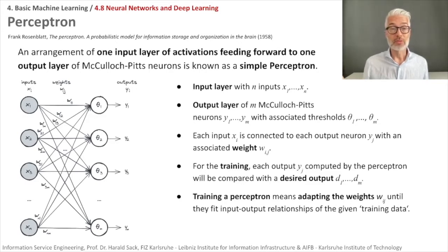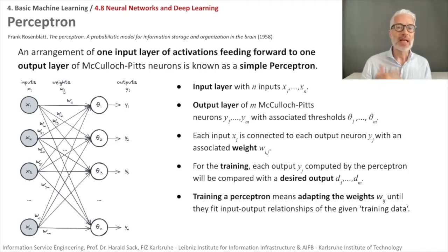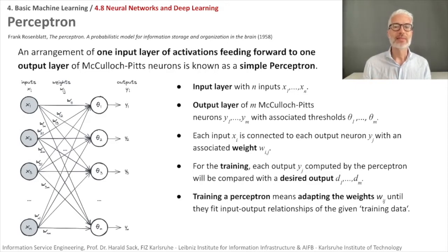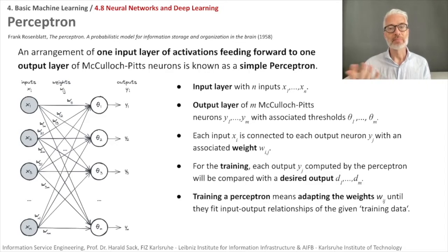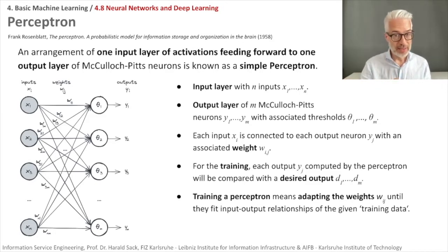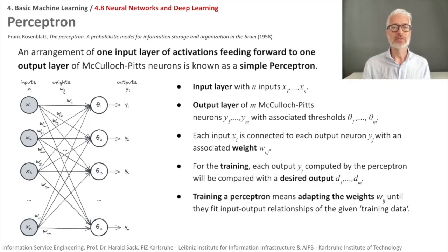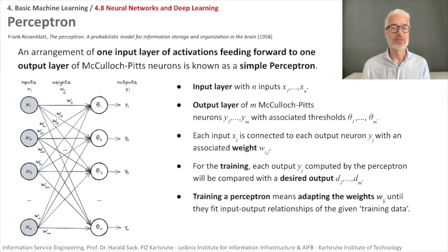If we take several McCulloch-Pitts neurons together, an arrangement of one input layer of activations feeding forward to one output layer of McCulloch-Pitts neurons is called a perceptron. You have an input layer with n inputs x₁ to xₙ, and an output layer of m McCulloch-Pitts neurons y₁ to yₘ associated with recording thresholds θ₁ to θₘ. Each input xᵢ is connected to an output neuron yⱼ with an associated weight wᵢⱼ. For training, each output computed by the perceptron is compared with the desired output, and training takes place by adapting the weights until they fit the input-output relationships of the training data.